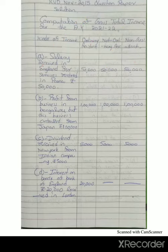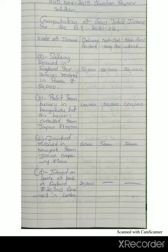First type of income: salary received in England for services rendered in Pune, Rs. 50,000. This is Indian income because services are rendered in Pune. The source is India, so it is Indian income and it is taxable to all — ordinary resident, not ordinary resident, and even non-resident in India.